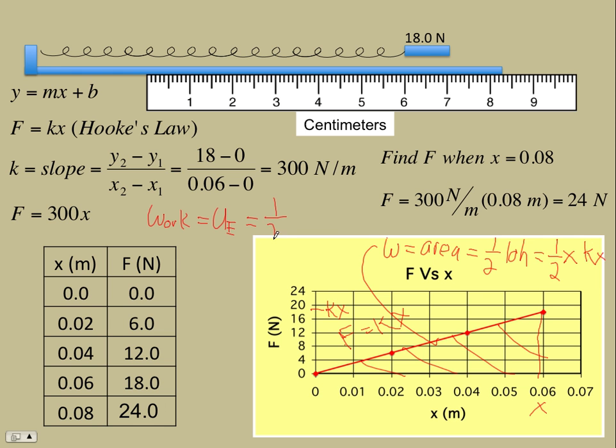The area of this triangle is one half the base x times the height kx. That's normally written as one half kx squared. So both equations you need to know about springs: the potential energy is one half kx squared, and the force is proportional to x, f equals kx.